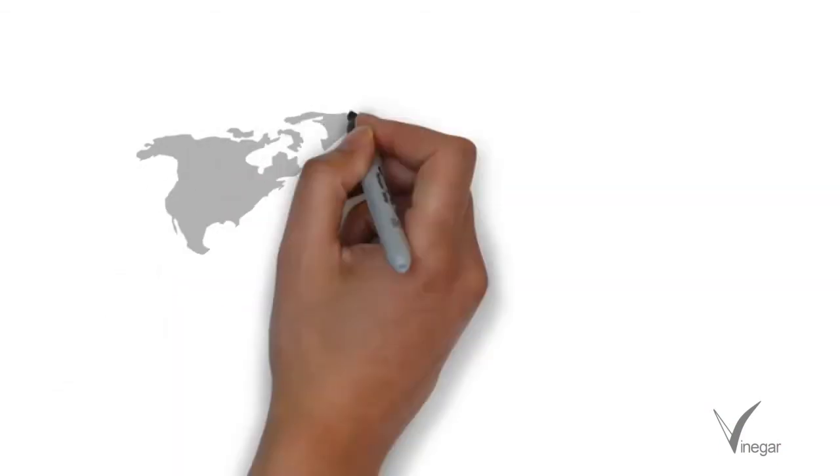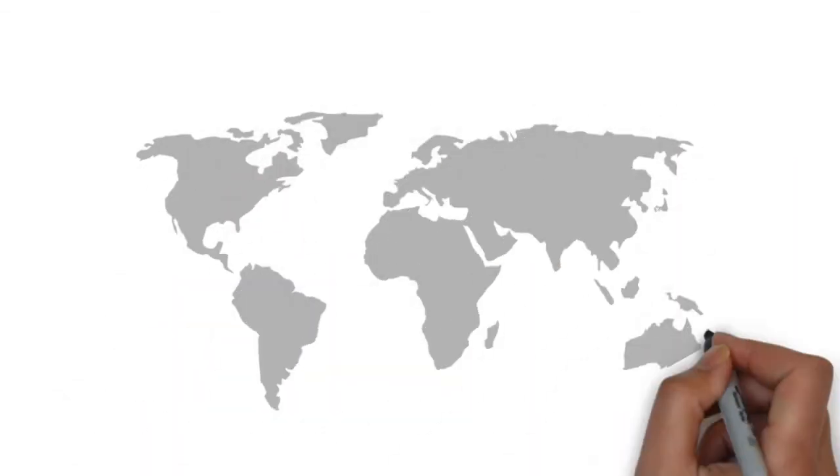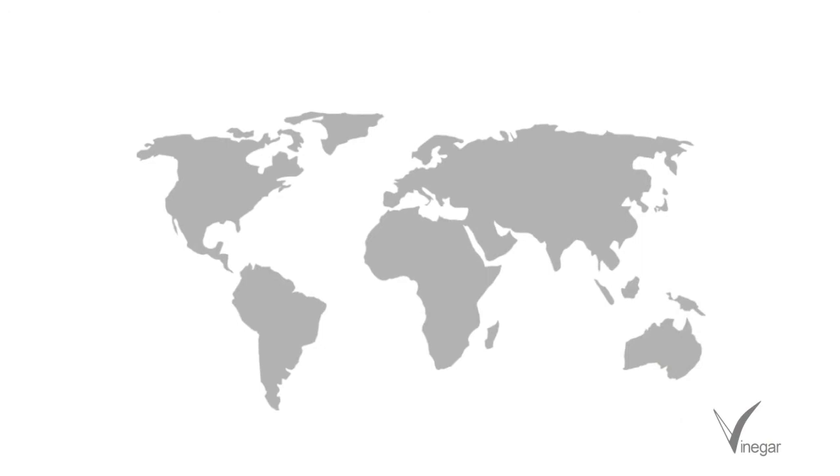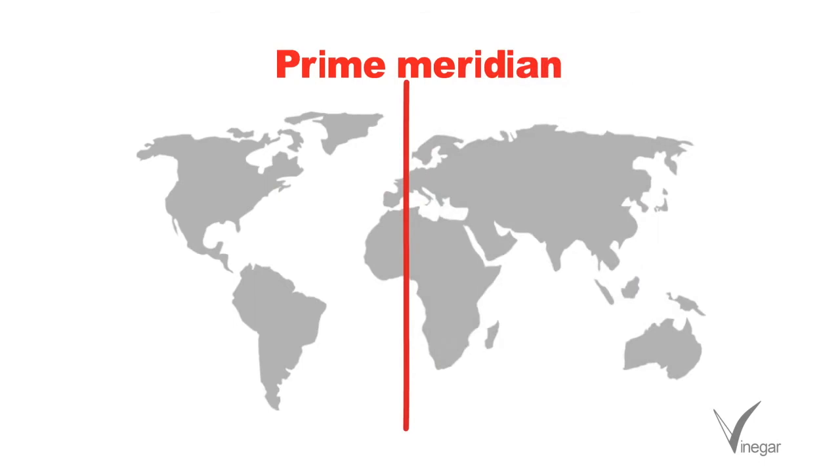Two longitudes which are most important are the prime meridian and international dateline. In 1884 it was decided that the zero meridian will be the one which passes through the Royal Astronomical Observatory Greenwich London. This is called the prime meridian. And by taking this as reference we find other meridians which vary from 0 to 180 degrees east and west from the prime meridian.